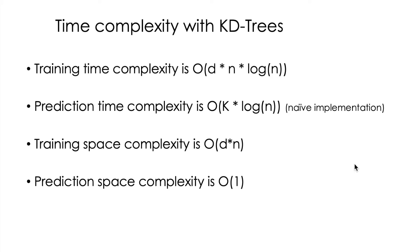After we have the tree, we need the prediction time complexity. Once the tree is constructed and we need to find the K nearest neighbors, we're going to need log N time to traverse the tree until we reach the desired area. But also we're going to have to do this K times in a naive implementation. If we use a more efficient implementation, we can get rid of this multiplication and we're going to have O(K + √N), because we can use a heap data structure to save the current best nearest neighbors without the need of running the same search K times.